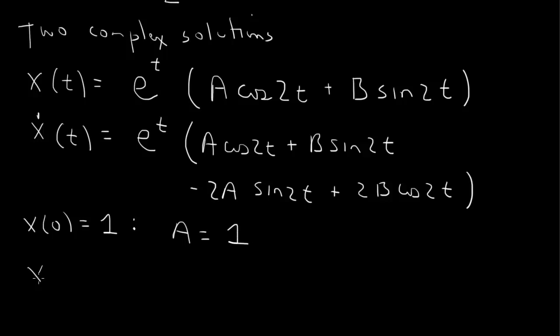And then the second initial condition, x dot of 0 equals 1. So we have e to the 0 is 1, so we have a plus b times 0 is 0, minus 2a times sine 0 is 0, plus 2b equals to 1. So a is 1, so that tells us then that b must be equal to 0.